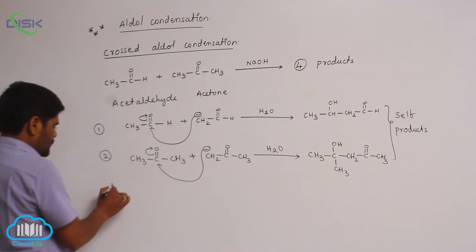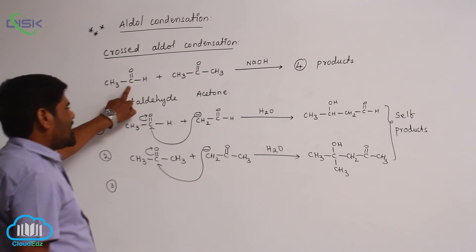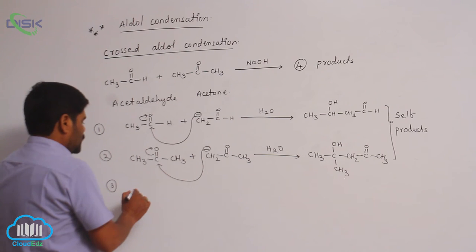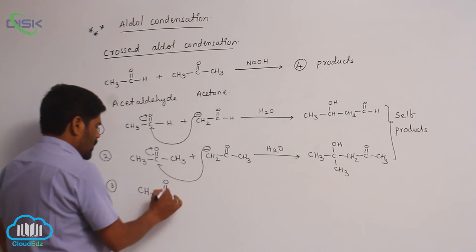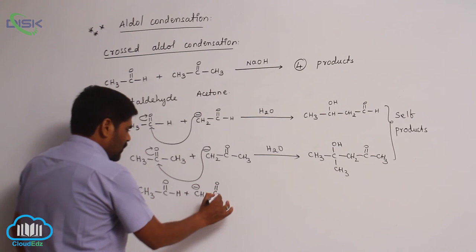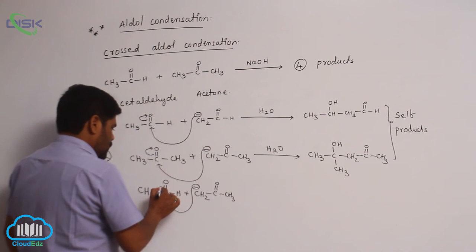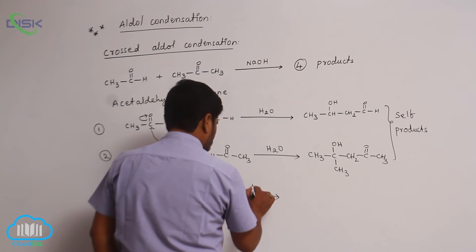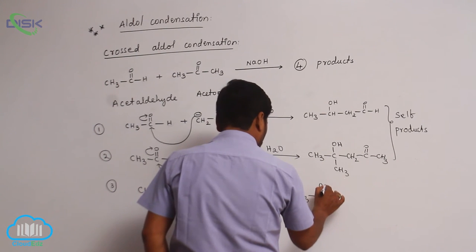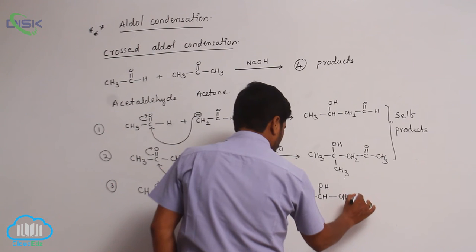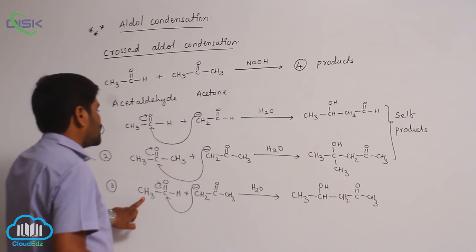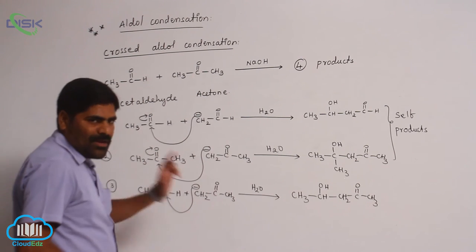The third product: one time acetaldehyde acts as a substrate molecule, and acetone can act as a carbanion. So the third product is formed from this combination — the acetone carbanion attacks on the aldehyde carbonyl carbon, and after addition of water, the crossed product is obtained.